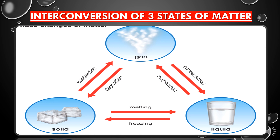Let us now summarize all these steps with one diagram. When a solid is heated it converts into liquid — the process is called melting. When liquid is heated it converts into gas — the process is called vaporization or boiling. When a solid directly converts into gas on heating, the process is called sublimation. Conversely, when a gas is cooled it converts into liquid by condensation or liquefaction, and when a liquid is cooled it freezes to form solid — a process called freezing or solidification.